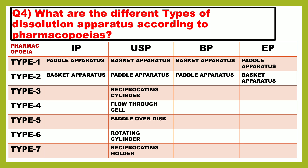Next question is: what are the different types of dissolution apparatus according to pharmacopoeia? According to Indian Pharmacopoeia (IP), Type 1 is paddle apparatus and Type 2 is basket apparatus. According to USP, Type 2 is paddle apparatus, Type 3 is reciprocating cylinder, Type 4 is flow-through cell, Type 5 is paddle over disc, Type 6 is rotating cylinder, and Type 7 is reciprocating holder. According to British Pharmacopoeia (BP), Type 1 is basket apparatus and Type 2 is paddle apparatus. According to European Pharmacopoeia (EP), Type 1 is paddle apparatus and Type 2 is basket apparatus.